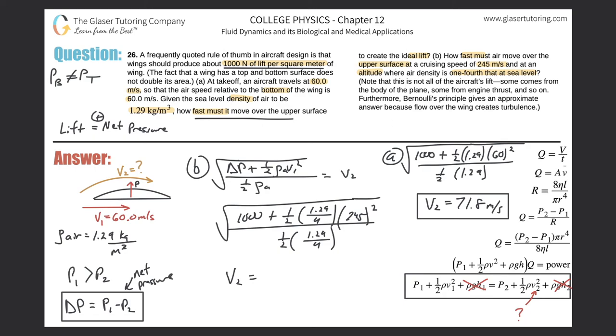So let's see what that works out. So square root parenthesis 1000 plus point five times 1.29 divided by four. And then that multiplied by 245 squared, close the parentheses, then divided by open those parentheses, 0.5 times 1.29 divided by four, close them. And what do we get 257.3. So 257.3 meters per second. So that is the calculation there for letter B.